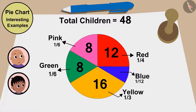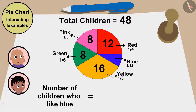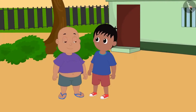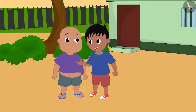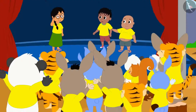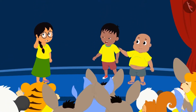Bablu says, 'Raju, I like blue color a lot, but in this pie chart the share of children who like blue is the smallest.' Raju calculates, 'The number of children who like blue is 48 times one by 12, or 48 divided by 12 — that is, four.' Bablu says, 'Out of whom, I am one!' They quickly told Mrs. Khan that most children like yellow color, and all the children celebrated the annual festival with great enthusiasm by wearing yellow shirts.